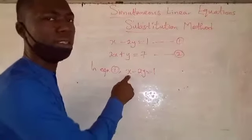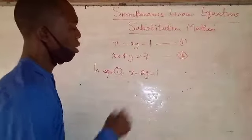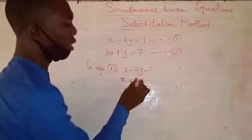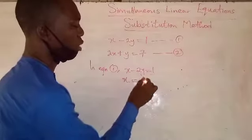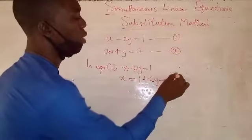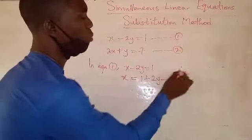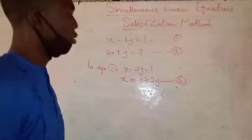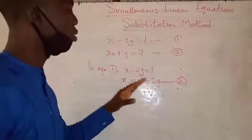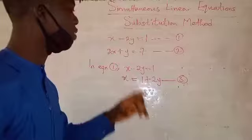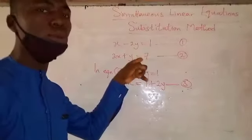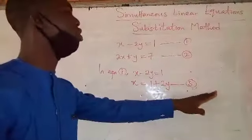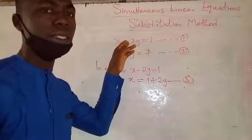In equation one we have x minus 2y equals 1. To make x the subject of this formula, all I have to do is take the 2y to the right hand side, giving us x equals 1 plus 2y. This becomes my equation three. Don't forget, we can also use equation two to get equation three, so it is not compulsory that we must always use equation one.